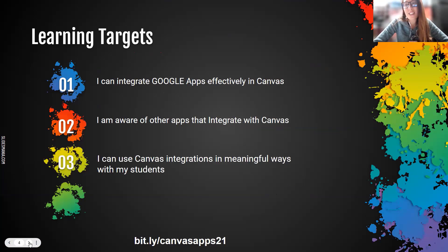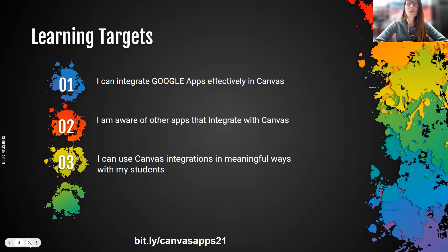We'd like to start with our learning targets, just like you start your class this way. It's important to know the direction that we're going. So at the end of this session, you can say that you can integrate Google Apps effectively in your Canvas LMS. You can also say that you are aware of other apps that integrate with Canvas and that you can use your Canvas integration in meaningful ways with your students.